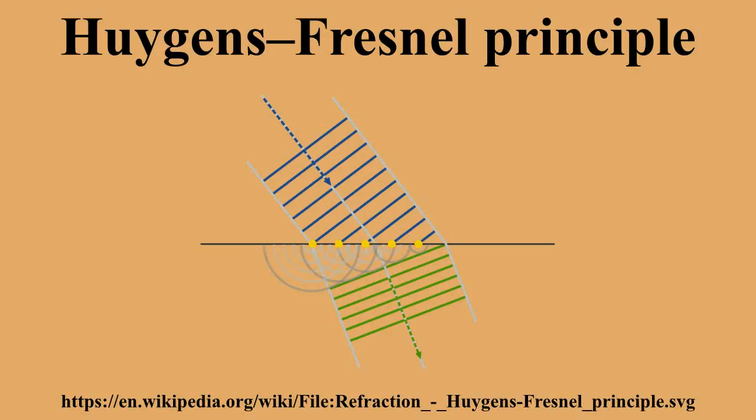In 1816, Fresnel showed that Huygens' principle, together with his own principle of interference, could explain both the rectilinear propagation of light and also diffraction effects. To obtain agreement with experimental results, he had to include additional arbitrary assumptions about the phase and amplitude of the secondary waves, and also an obliquity factor. These assumptions have no obvious physical foundation but led to predictions that agreed with many experimental observations, including the Arago spot.